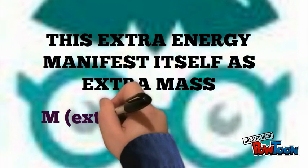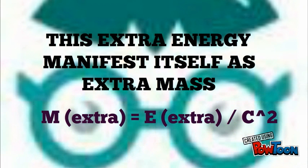Oops. So, what's that Einstein's equation where M extra is equal to E extra divided by C squared.